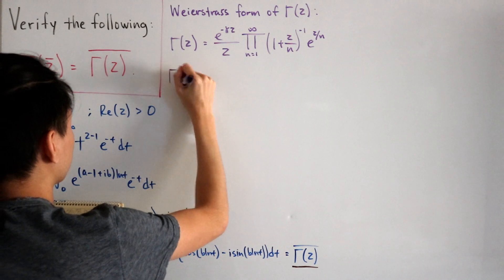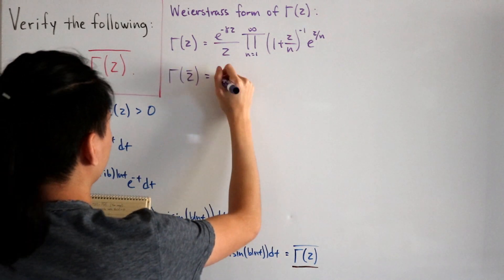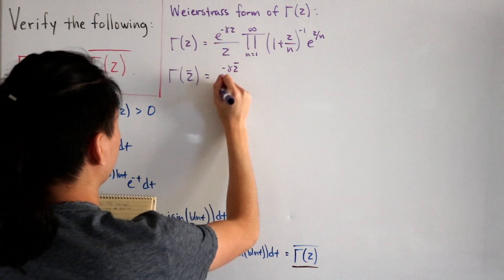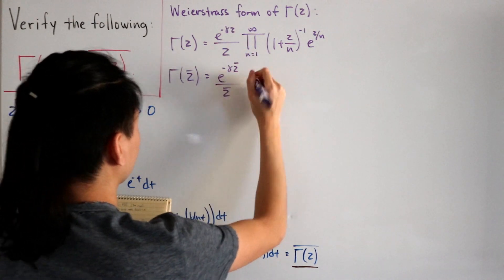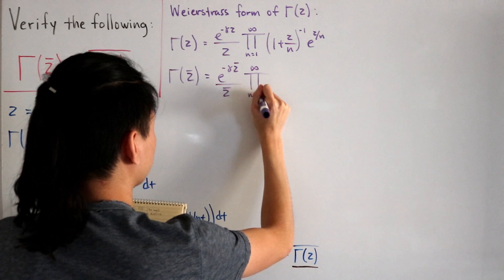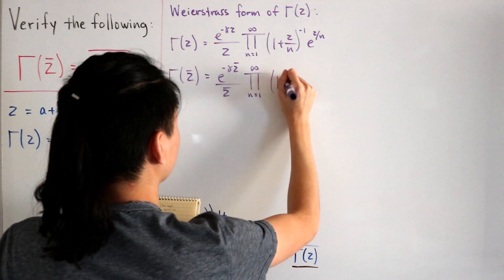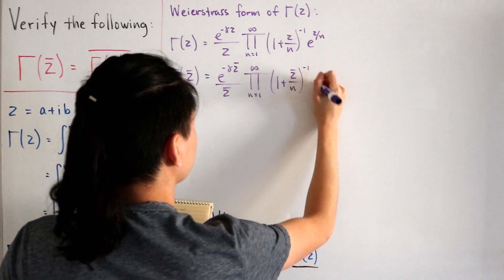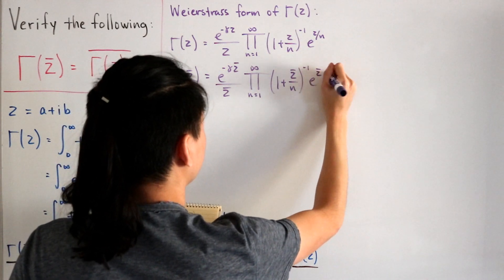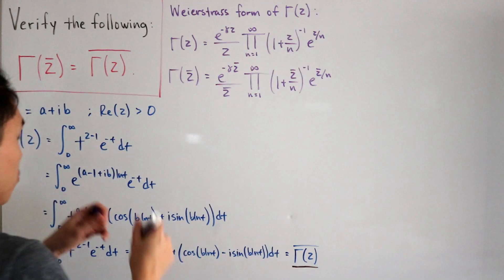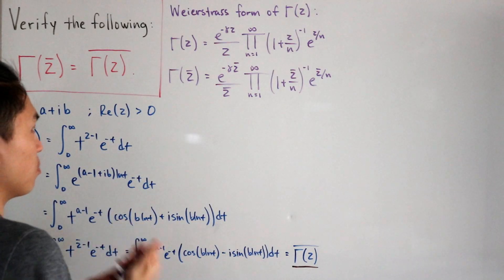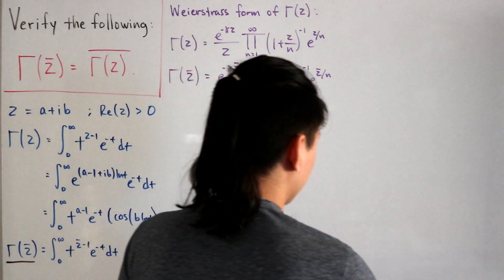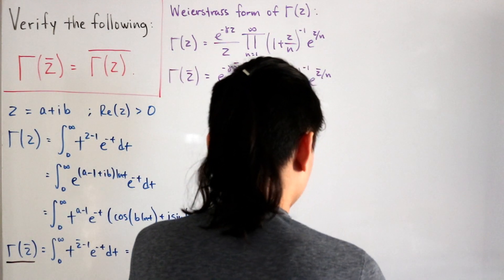Now let's plug in the complex conjugate z-bar. We substitute z-conjugate everywhere z appears: we get e to the negative gamma over z-conjugate, times the infinite product of (1 plus z-conjugate over n) inverse times e to the power z-conjugate over n. We need to use some properties of complex conjugates to simplify each piece.